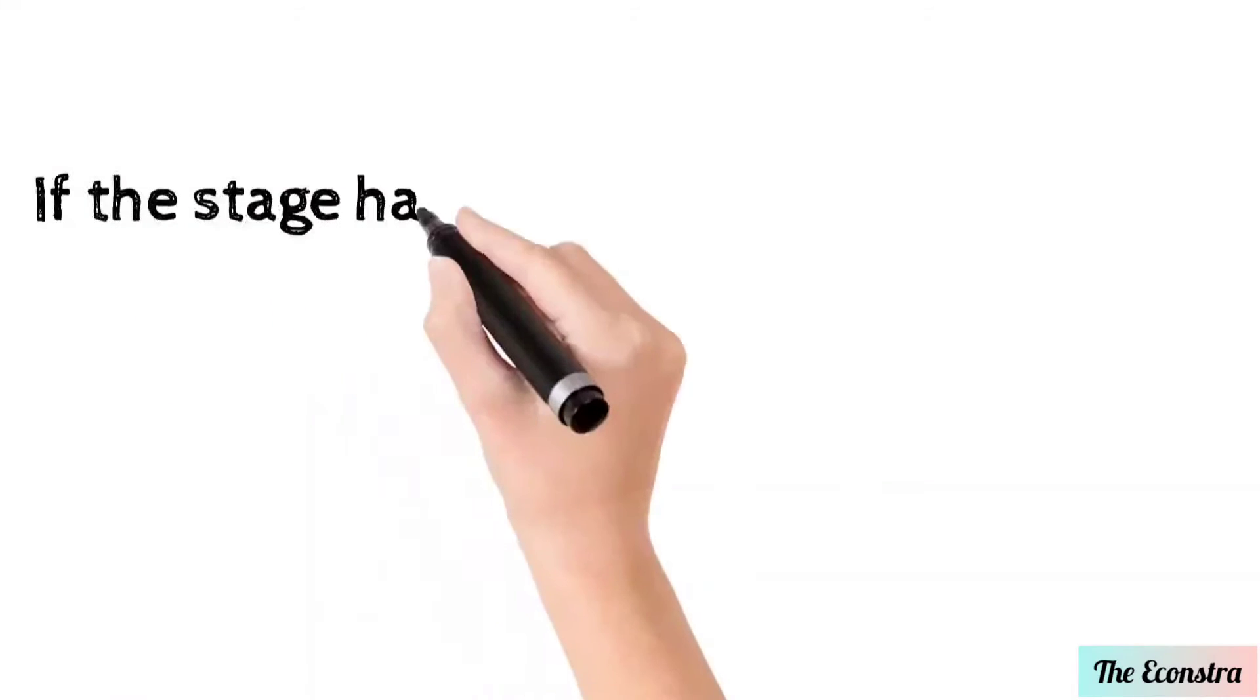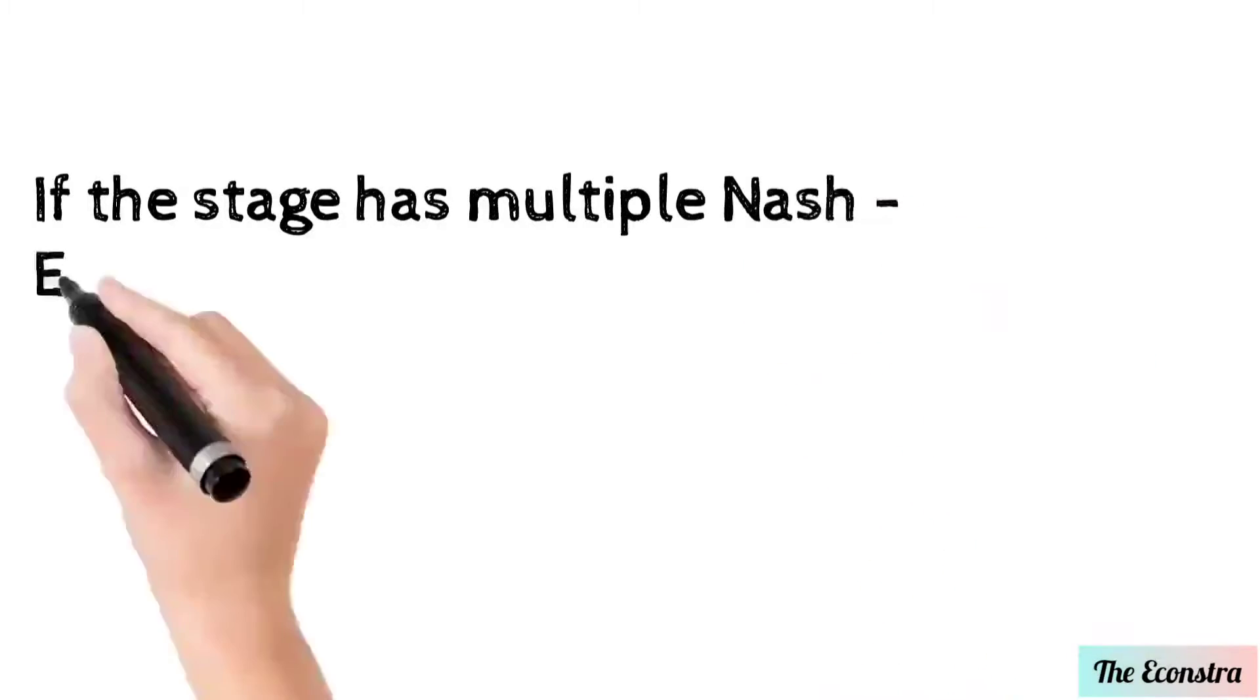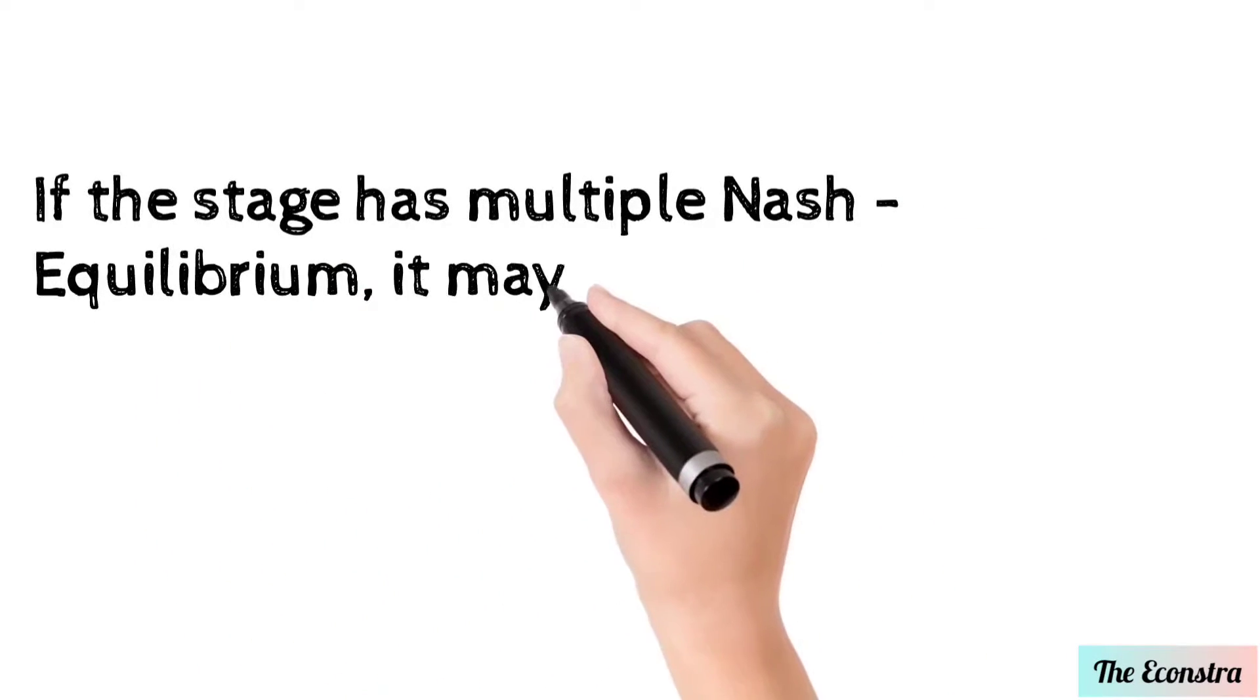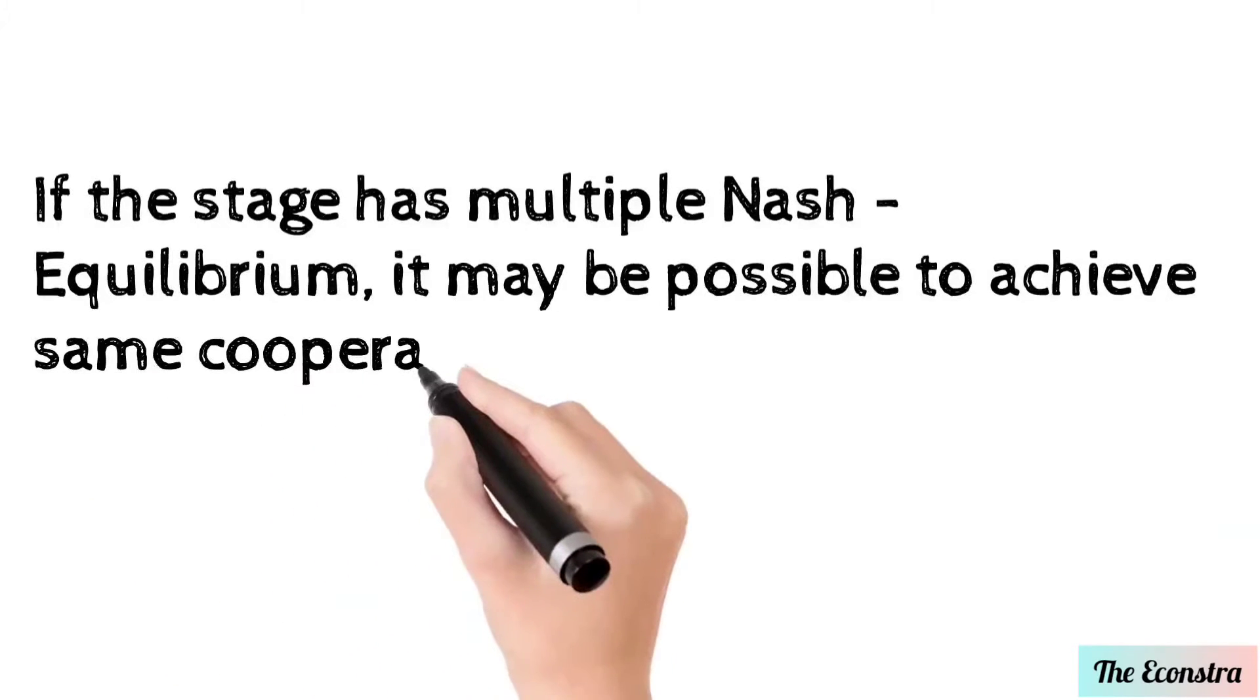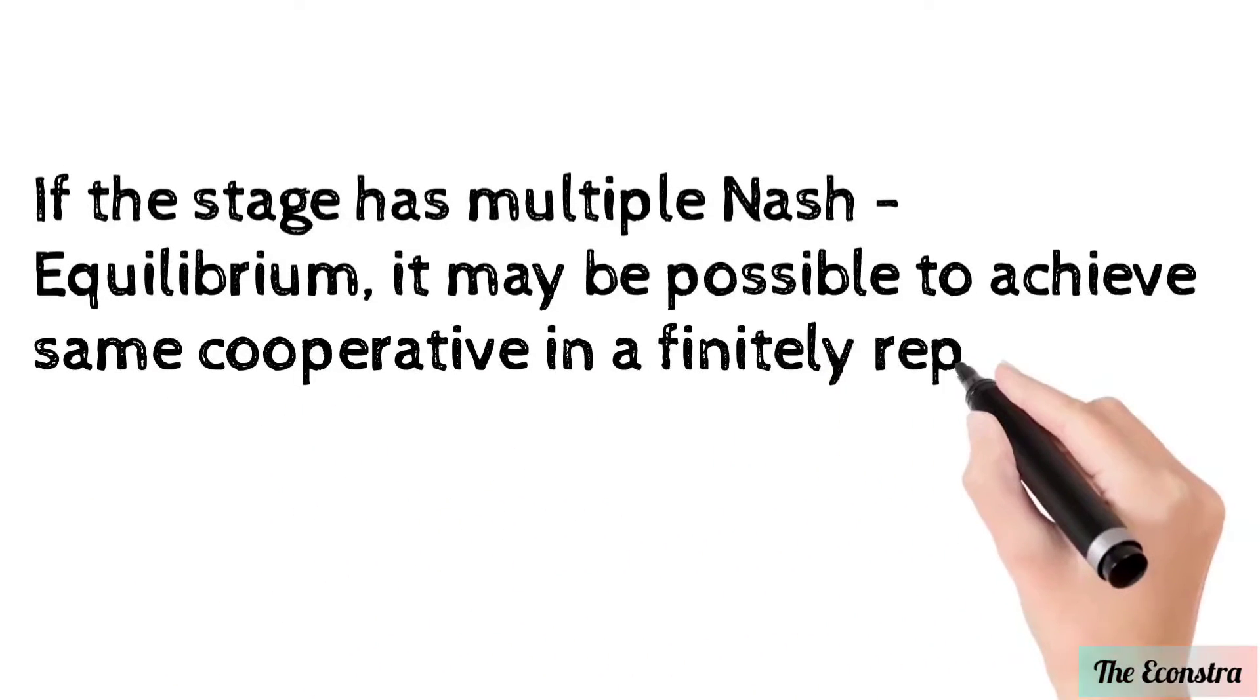If the stage has multiple Nash equilibria, it may be possible to achieve some cooperation in a finitely repeated game.